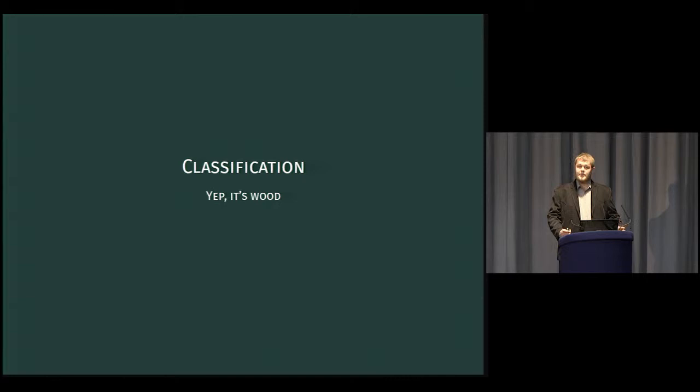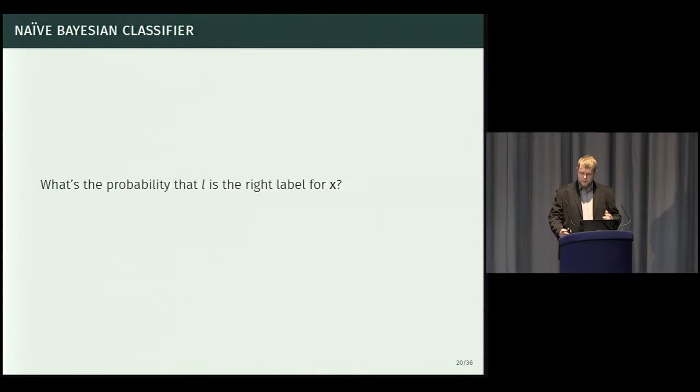Okay. So now let's talk about classification. Just a reminder, classification is when we have some predefined, finite set of labels, and we have to assign one of them to each of the inputs. So the simplest approach, and this is actually mentioned in Tripos a few times, is the Naive Bayesian classifier, which asks the question: what's the probability that the given label is the right one for our feature vector, for our input data? And then, given answer to that question, we just pick the one that has the highest probability, and then that's it. We have the right class, the right label for our data.